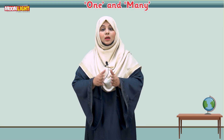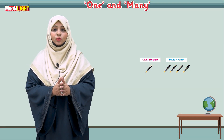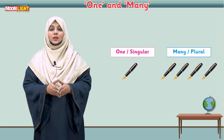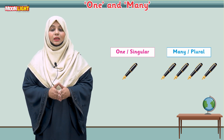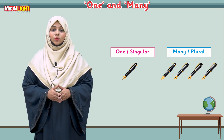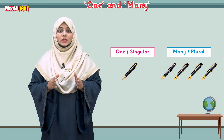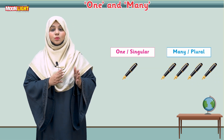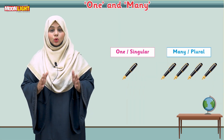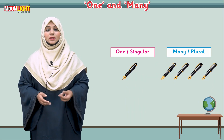For this, what you have to do is first of all show one thing to the students. Tell the students that if anything is one in number, that will always be singular. But if there is anything that is more than one, that will always be plural.